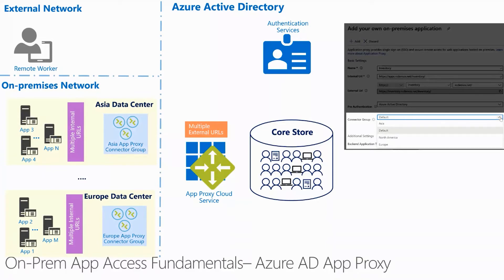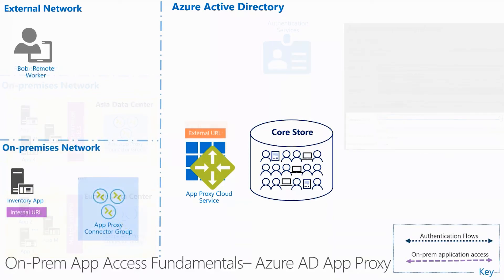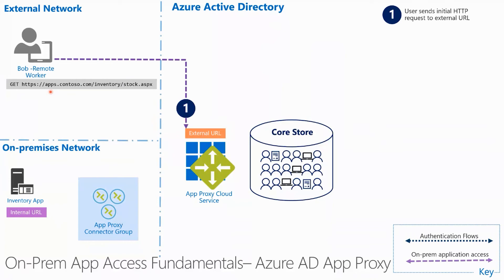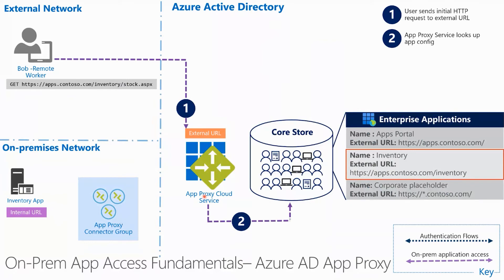Now that we have gone through all of this setup, let's walk through an example to see authentication in action. Let's start the flow with Bob. He needs to access an inventory intranet app to see if there are enough hand sanitizer bottles for him to order. For that, he uses a bookmark in his browser. With this setup, the browser will first reach the Azure AD App Proxy Cloud Service in step one. When the request is received by the cloud service, it needs to determine the underlying application configuration based on the URL sent by the client. In step two, the App Proxy service looks up the Azure AD application object that has the closest match based on the URL hostname and path. In this example, the system chooses the app that has the slash inventory object in the path.